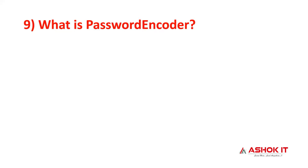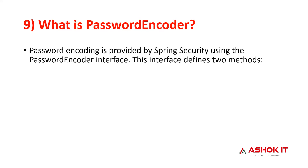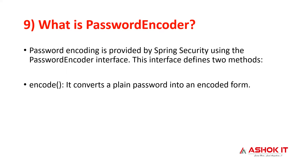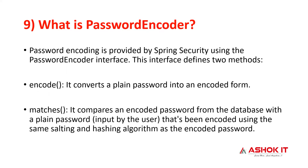Question number nine: what is Password Encoder? Password Encoder is an interface provided by Spring Security with two main methods. The encode method is used at the time of registering a user — it converts plain text into an unreadable format and stores it in the database. The matches method is used at login — the user's entered password is encoded and compared with the database password. If both match, the user is validated.